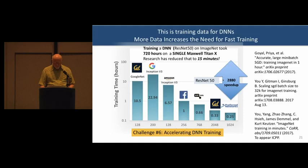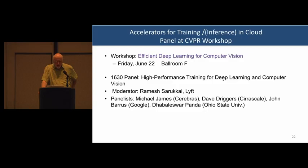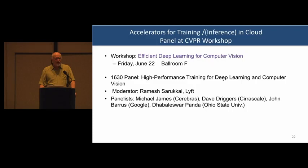Later in the week, we're going to have a panel talking about new accelerators for training in the cloud — less so for inference, but more for training. We'll have updates from companies like Cerebras and Cirrascale, as well as folks from Google, and Professor Panda, one of the world's networking experts for high-performance computing systems. It should be really good, and it'll be after this workshop is finished so there's no conflict.